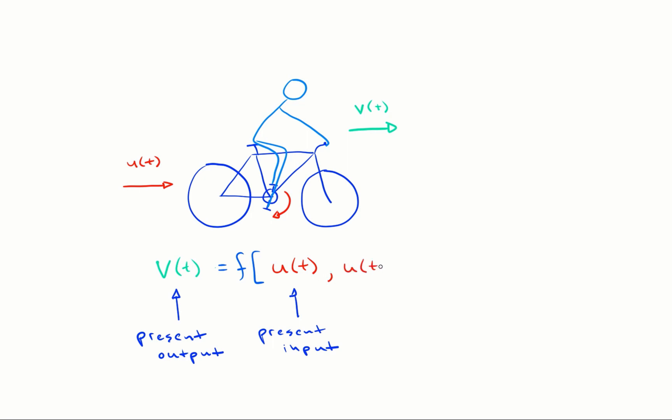However, we also know that we might have some residual velocity left over from pedaling some time ago. In other words, the present velocity might also be a function of past inputs. This dependency of the output on present and past inputs is what makes this a dynamic system.